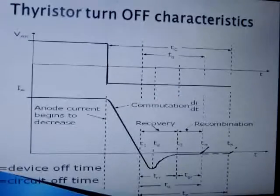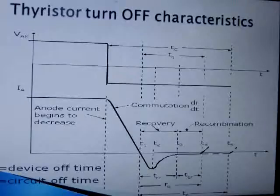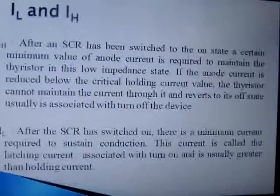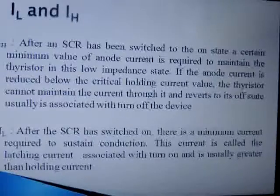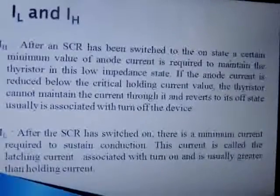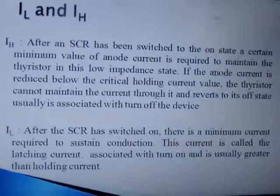These are the transient characteristics of a thyristor. T_Q is the device turn-off time and T_C is the circuit turn-off time. After applying a reverse voltage V_AK, it takes at least time T_C to turn it off physically. I_H is the holding current and I_L is the latching current of the thyristor.